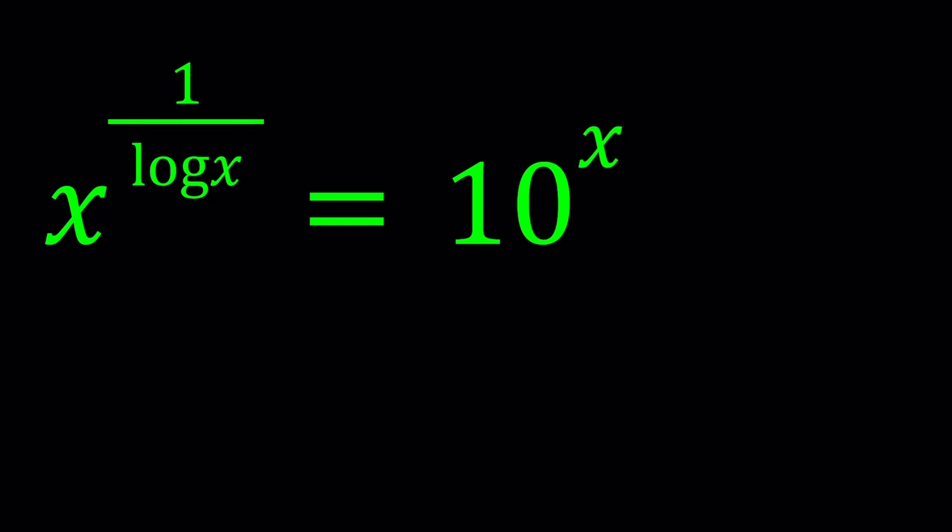We've done similar problems before, I don't think I've done this exact same one. If I did, please let me know. Anyways, so we have x to the power 1 over log x, log x being base 10, equals 10 to the power x. So base-wise, we're good, we have the same base on both sides if you don't include the x. So I'll be presenting two methods, and let's start with the first one.